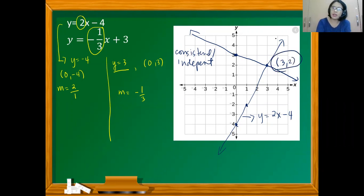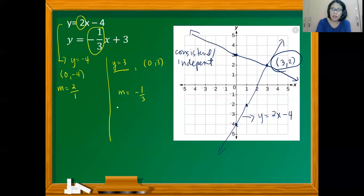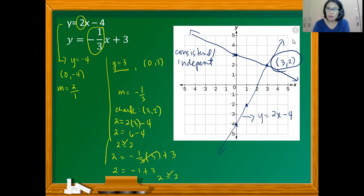This solution must satisfy both equations. Substituting (3, 2) into the first equation: y = 2 equals 2(3) minus 4, so 2 equals 6 minus 4, giving 2 = 2. ✓ Substituting into the second equation: 2 equals negative one-third times 3 plus 3, so 2 equals negative 1 plus 3, giving 2 = 2. ✓ So (3, 2) is confirmed as the solution.